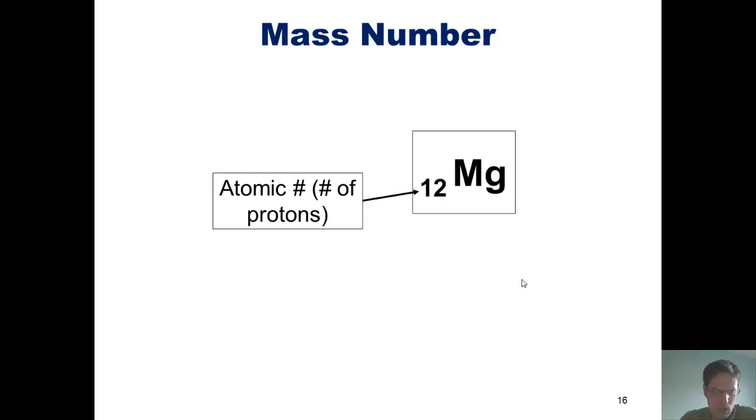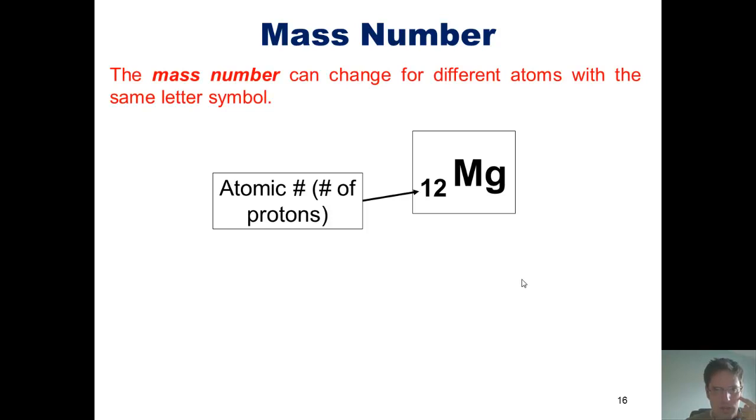So what in the world is a mass number? Well, simply put, an atom's mass number is essentially how much that atom weighs. When we look at our periodic table, the mass number is a superscript that appears in the upper left-hand corner next to the atomic symbol. In the case of most magnesium atoms, that mass number is 24.